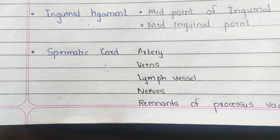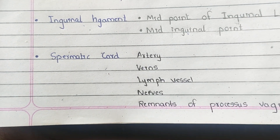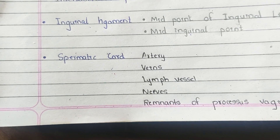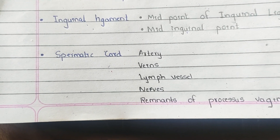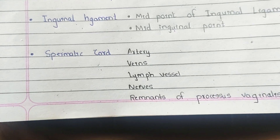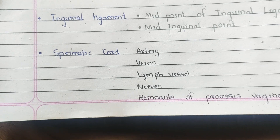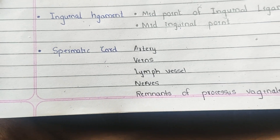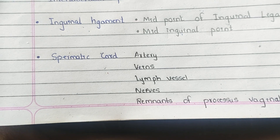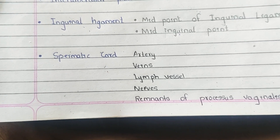The spermatic cord is a soft rounded cord present in males, which can be felt beneath the skin as it moves downwards near the medial end of the inguinal ligament. When palpated between finger and thumb, there is a firm palpation at its posterior end, which is the ductus deferens.